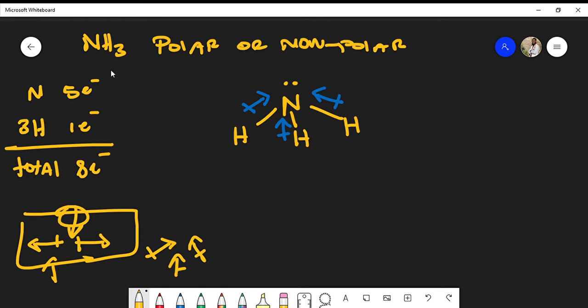This is why ammonia is actually polar. It is a polar molecule because we have a net dipole moment. Now I want you to be careful of something here.